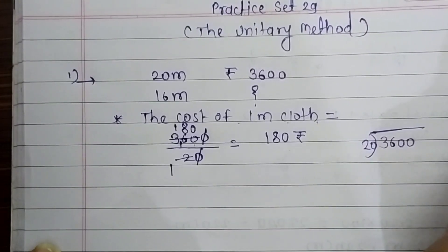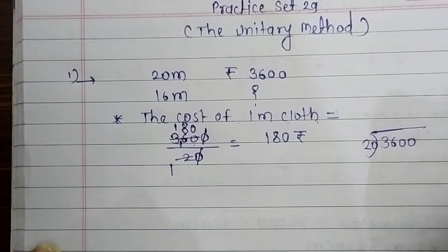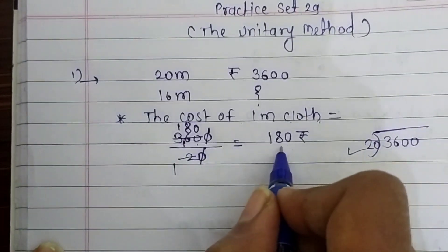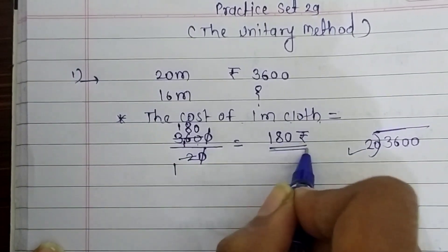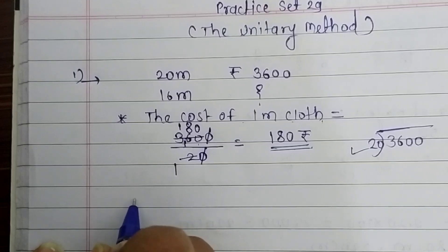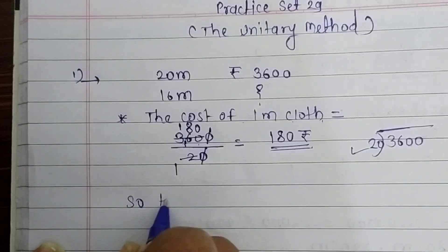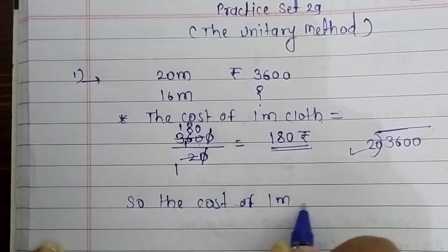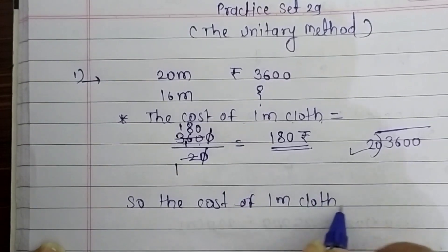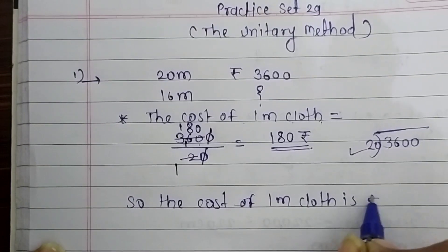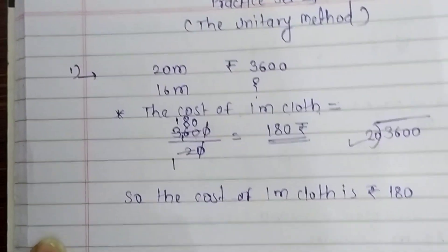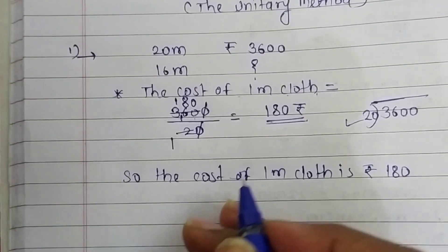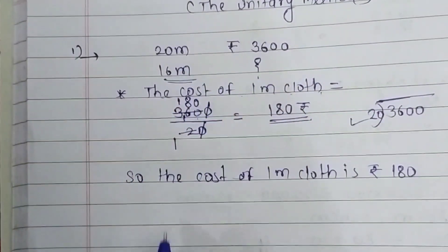Write the table of 20 and you can easily find it by this method also. The answer is 180 rupees. So the cost of one meter of cloth is rupees 180. Now we have to find out the cost of 16 meters of cloth — this is our main question.